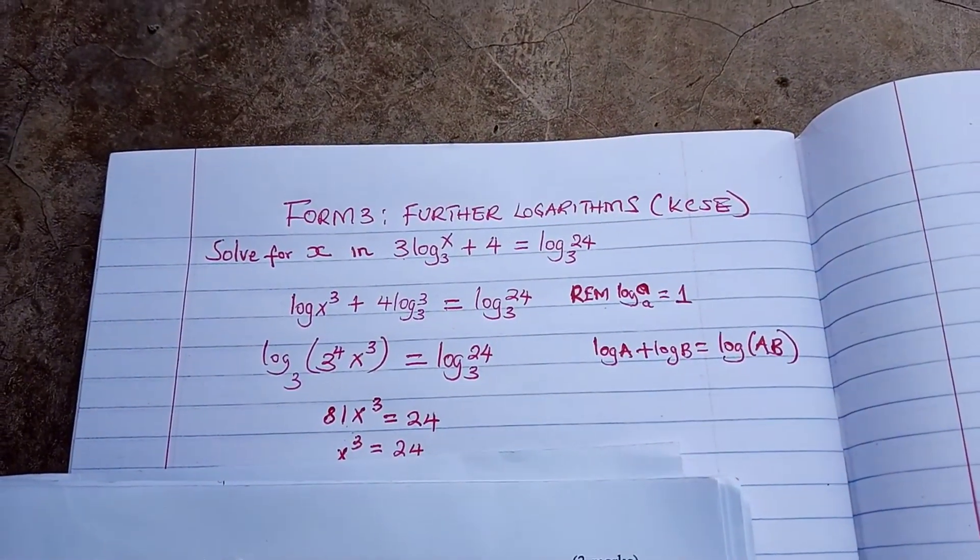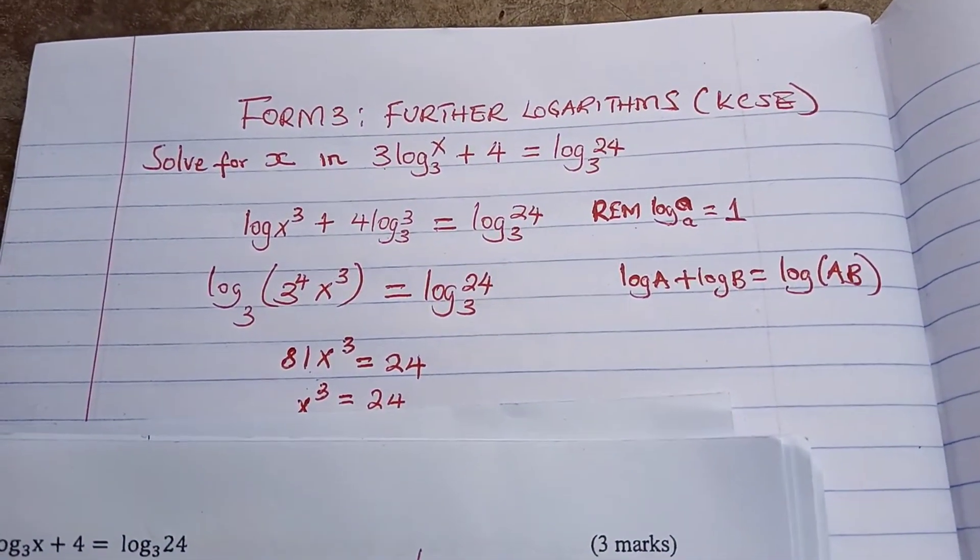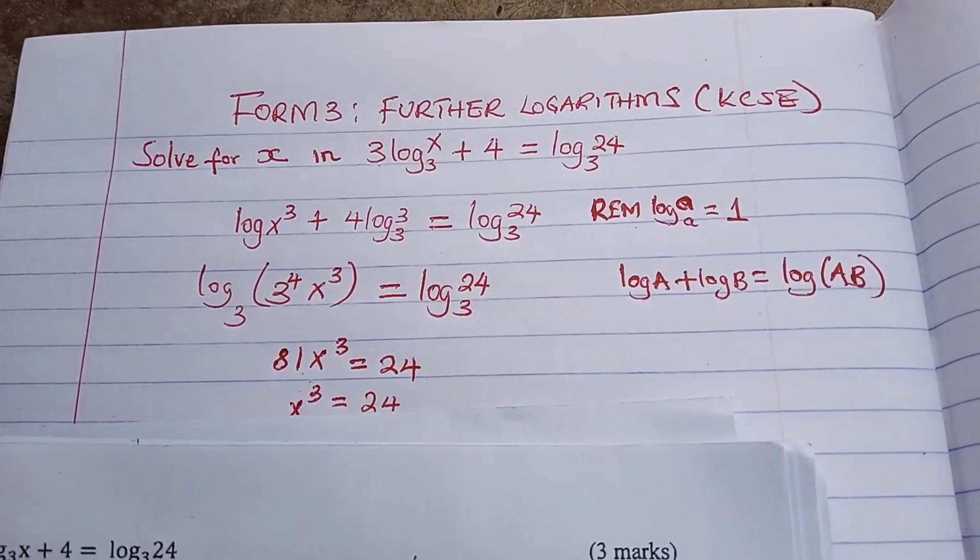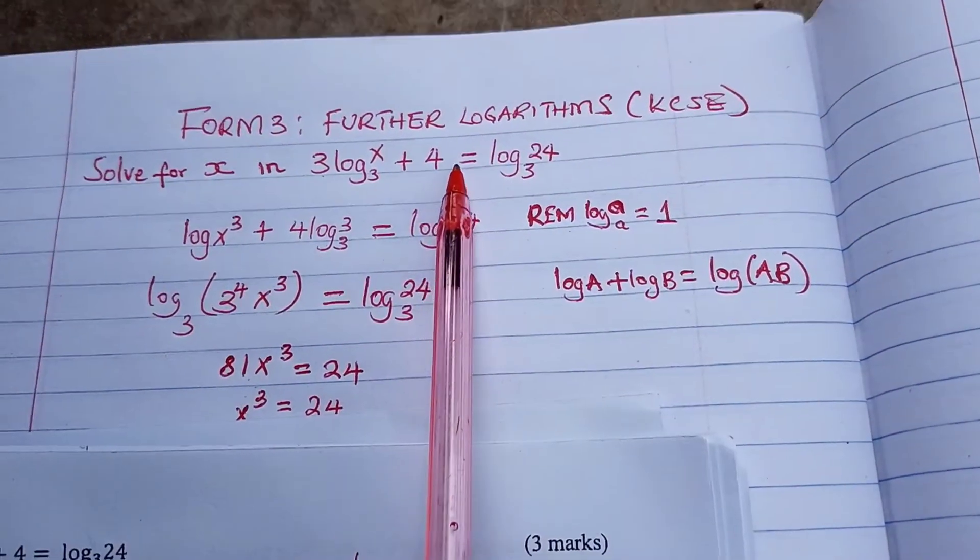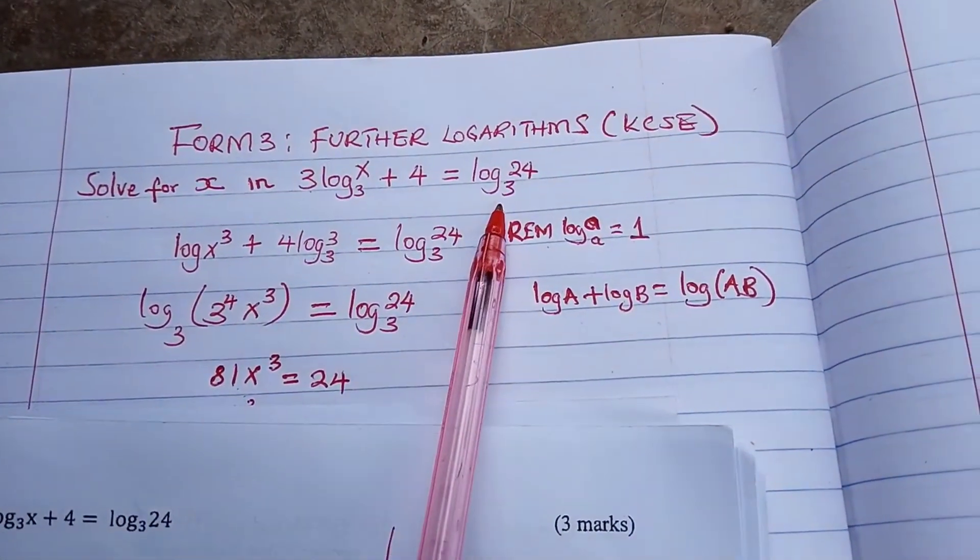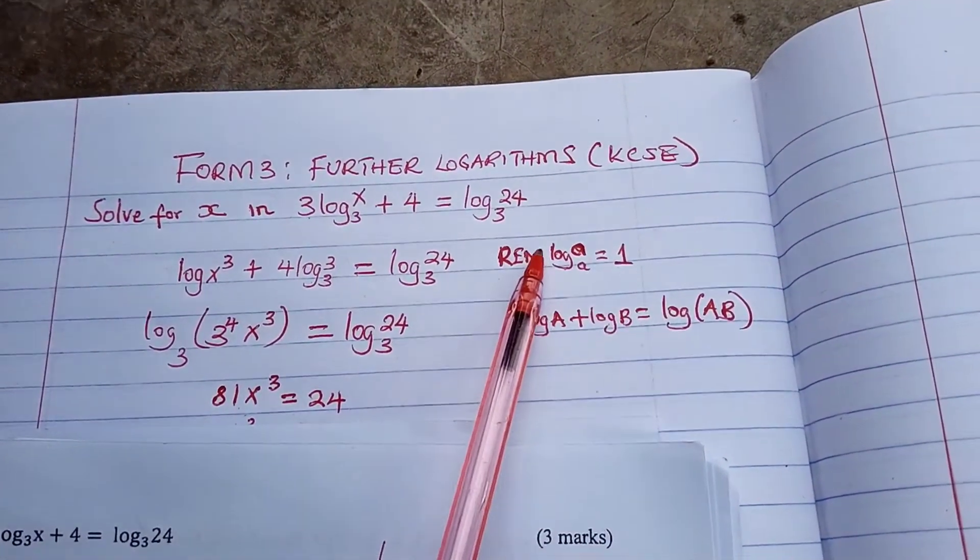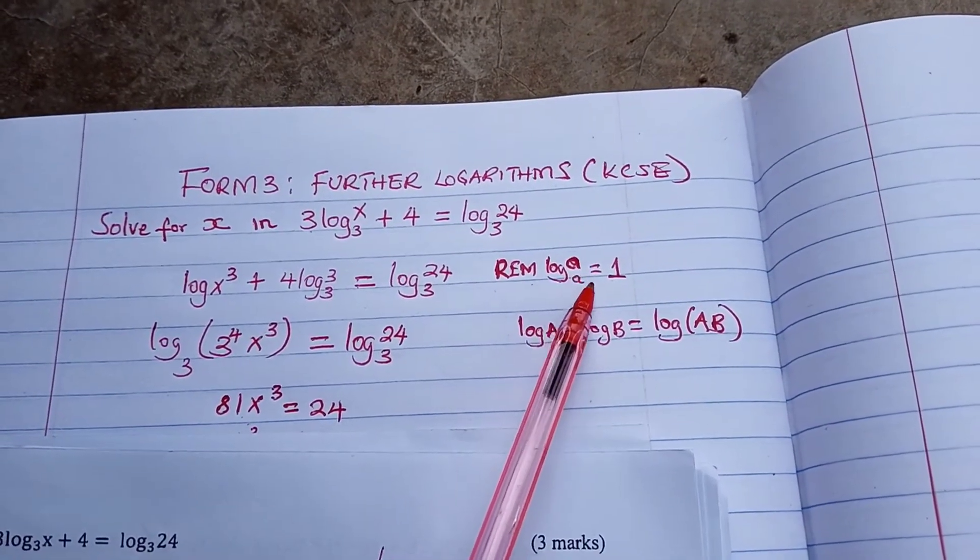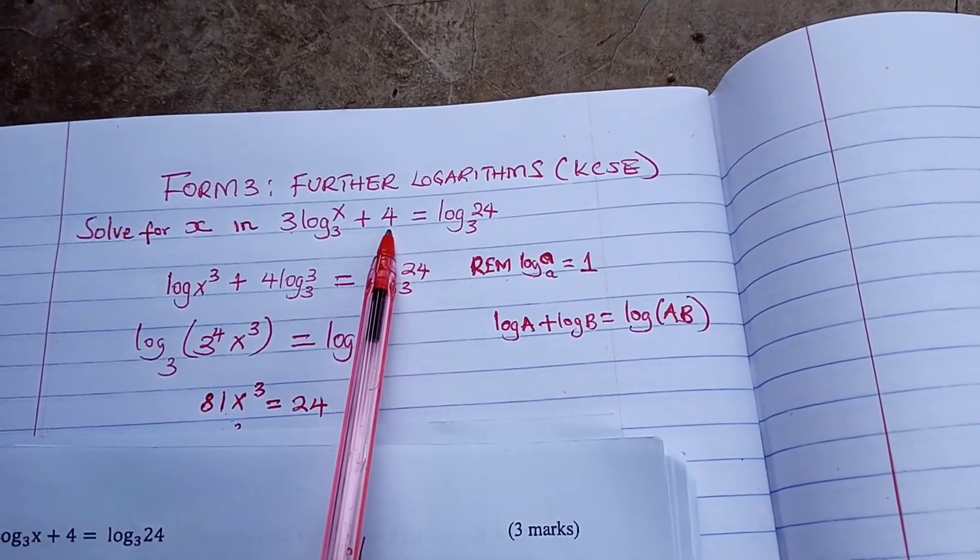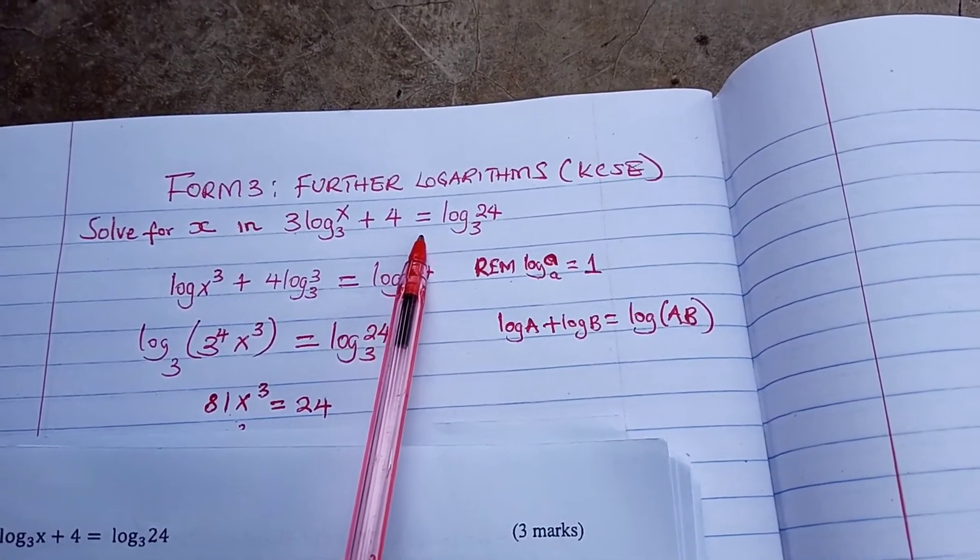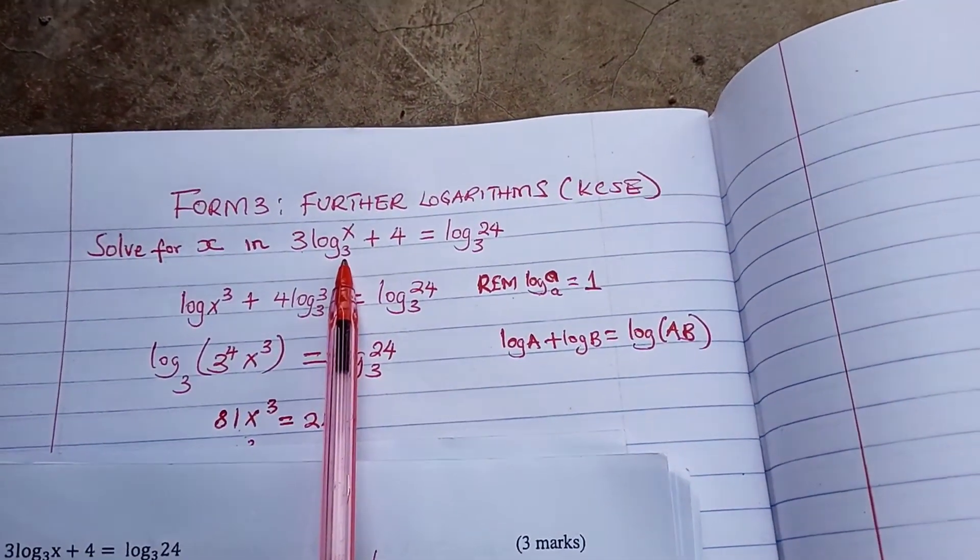Now I'm going to use a formula to change this 4. Using this formula for the whole number, I'm going to convert it to log. Now we know that log a to base a is 1. This means if the log of a number to its own base is 1, therefore we are going to replace this 4 with 4 log 3 to base 3, so that it is in conformity with other numbers that are having the same base as 3.